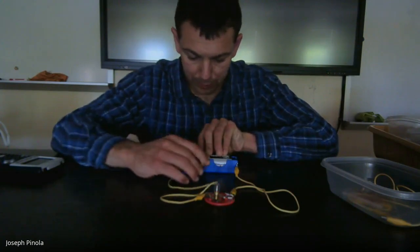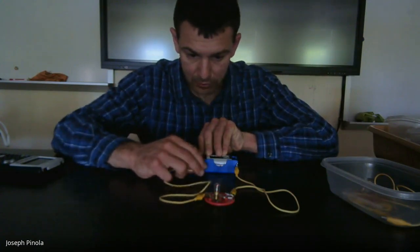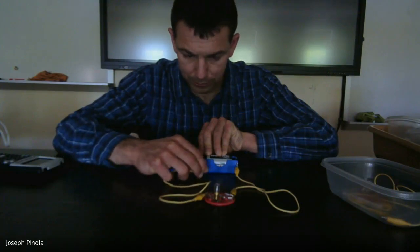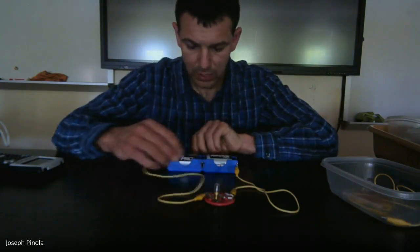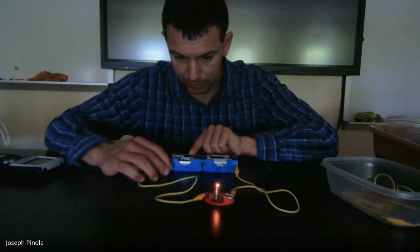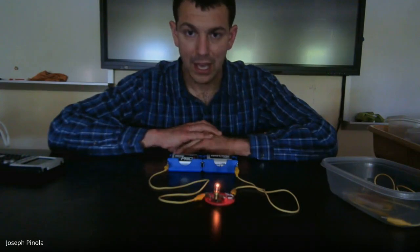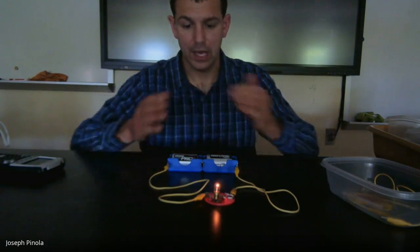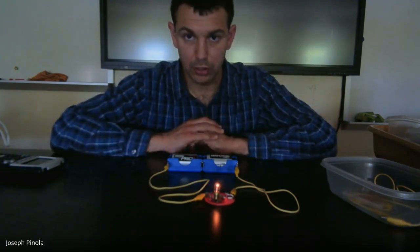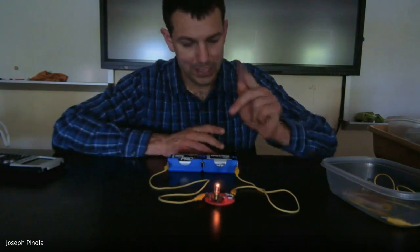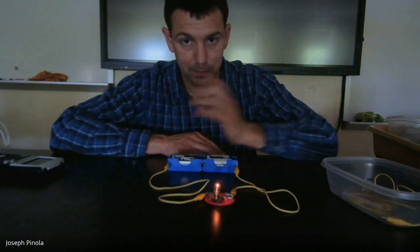This is what it looked like previously. Going on just barely. And this is what it looks like now. Going on and burning very brightly. As you can see, as the voltage goes up, the current goes up as well, provided that the resistance or the light bulb being used remains the same.